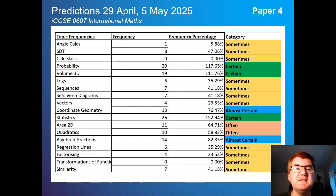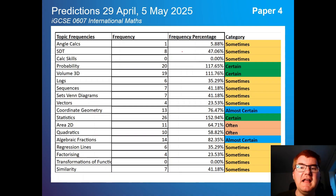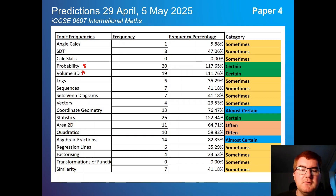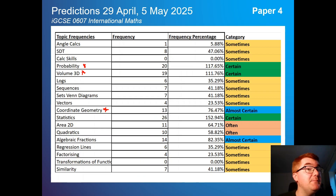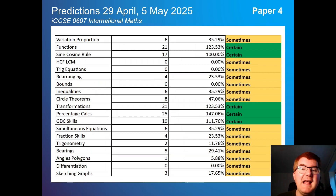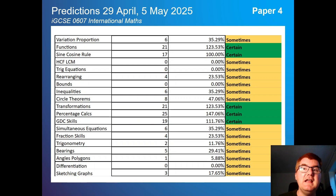Looking at the full spreadsheet, you can see everything here — probability, volume of 3D shapes, and also coordinate geometry, which I haven't talked about on either paper but usually does appear in some shape or form.